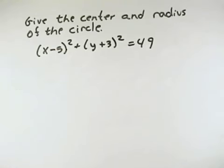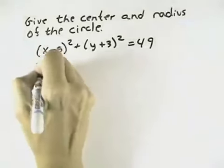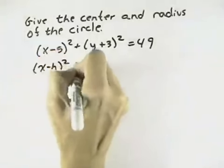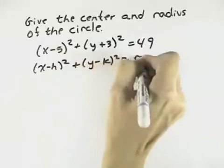Give the center and radius of the circle. Well, if we look at the equation of the circle, it follows the form of x minus h squared plus y minus k squared equals r squared